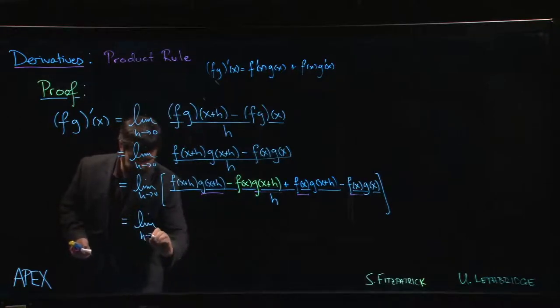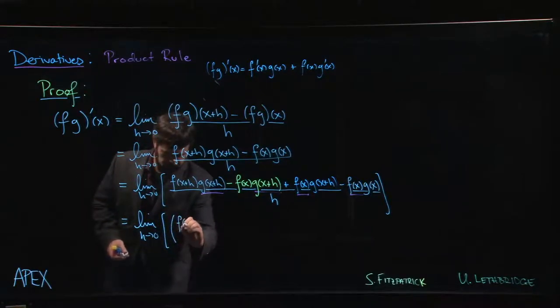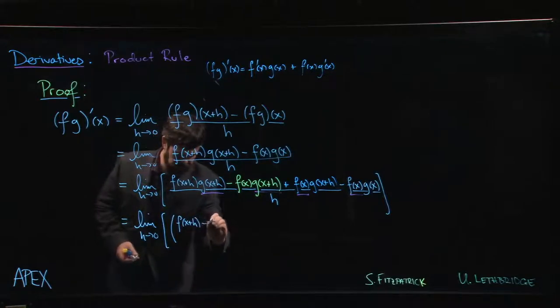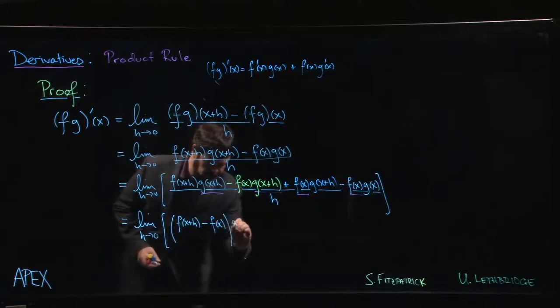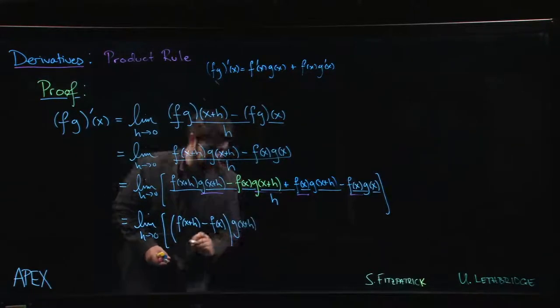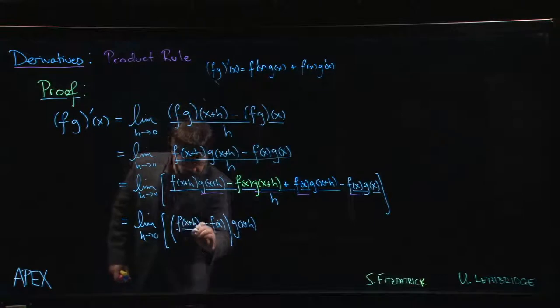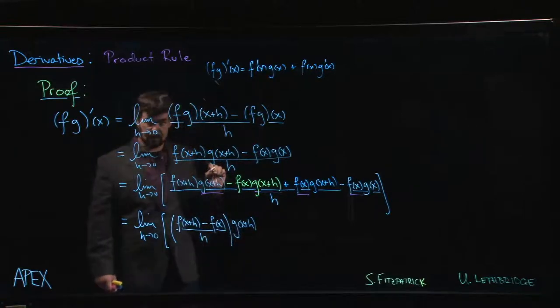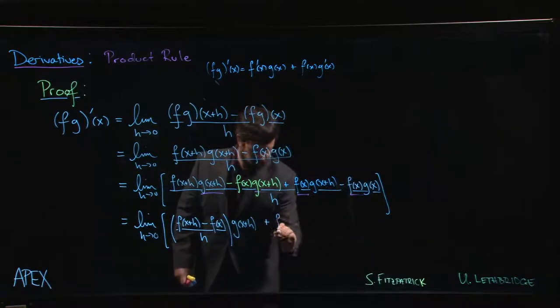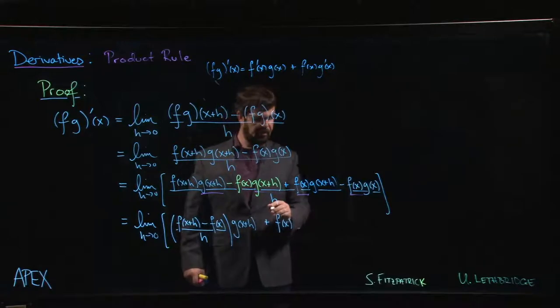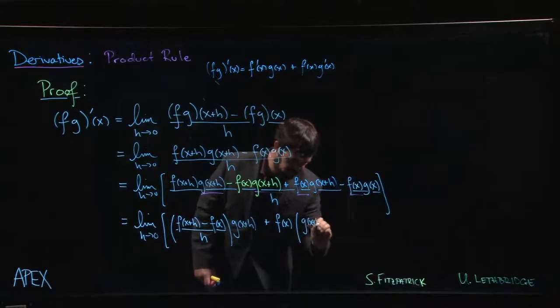We get the limit h going to zero of f of x plus h minus f of x times g of x plus h. And of course we can divide term by term by h. I'm going to put it here for obvious reasons.